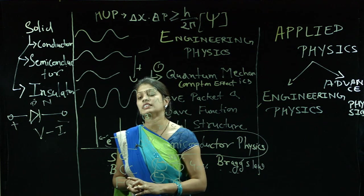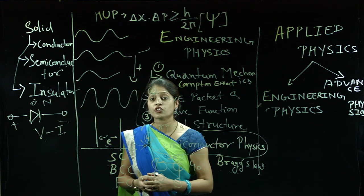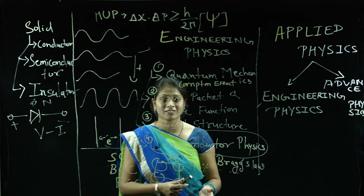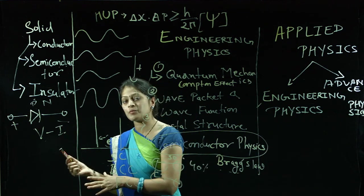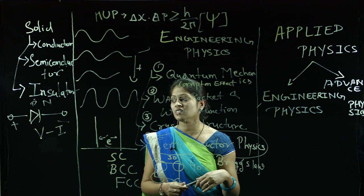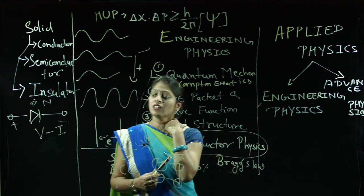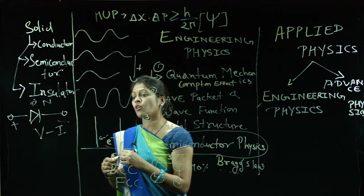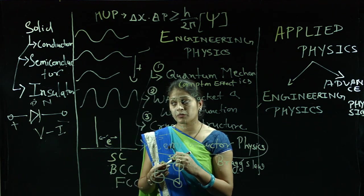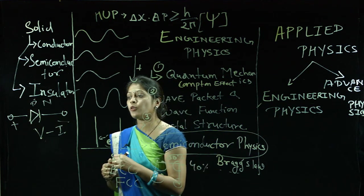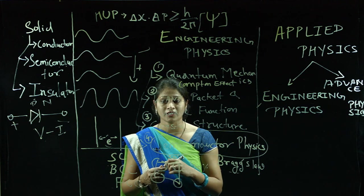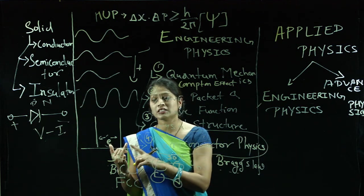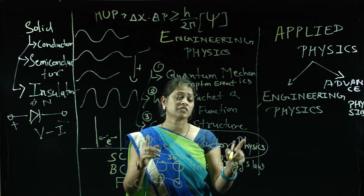The next topic in semiconductor physics is the transistor. The transistor is a very revolutionary invention in semiconductor physics. There are two types: PNP transistor and NPN transistor. The transistor is a very good amplifier used for amplification purposes, and there are three configurations: common base, common emitter, and common collector. We will discuss all three configurations and the important parts of the transistor — emitter, base, and collector — how the transistor can be used as an amplifier, and the VI characteristics of the transistor.